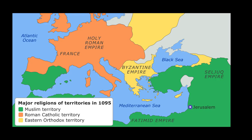Here you can see a little map of the various religious territories in 1095, which gives you an idea of the geographic layout. Everything in orange is the Roman Catholic territory. Everything in yellow is the Byzantine Empire, which as you can see is a lot smaller than it used to be. The Eastern Mediterranean, with the city of Jerusalem, is all controlled by the Seljuk Turks, which are part of the larger Islamic Empire at the time.